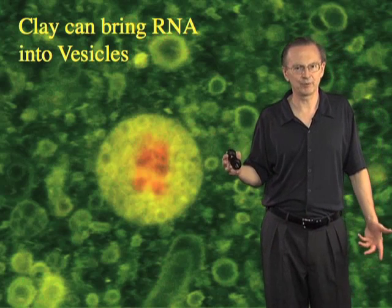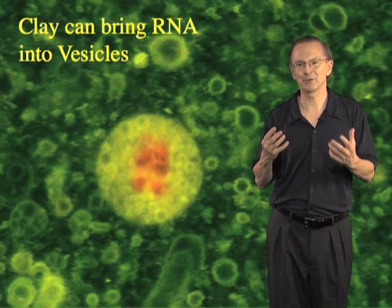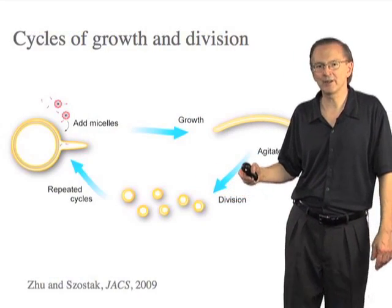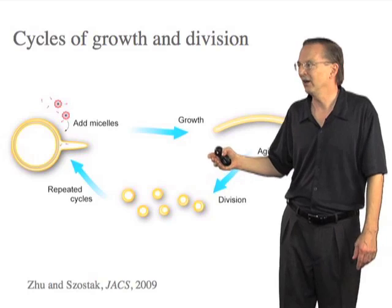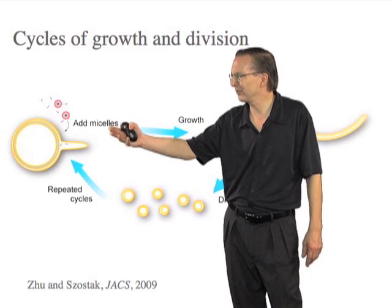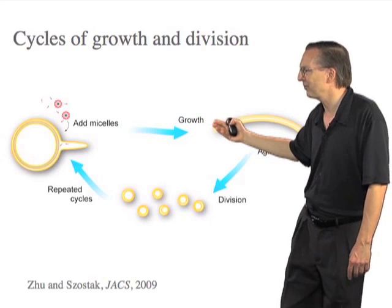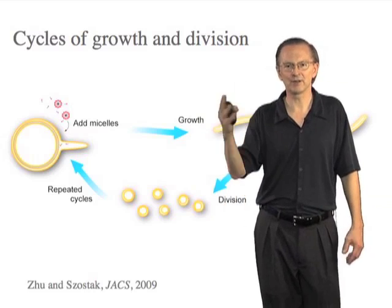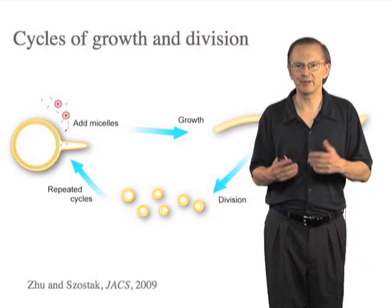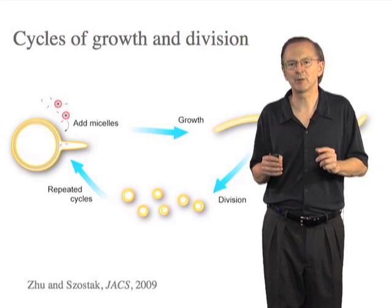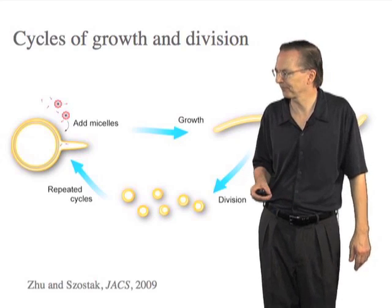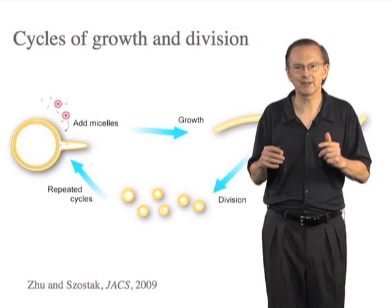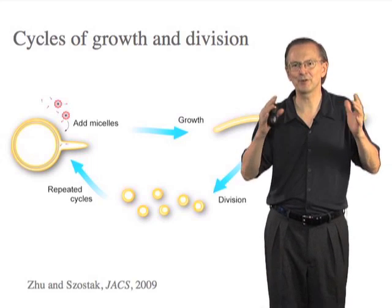Assembling these things looks fairly simple. But what about the process of growth and division? After all, that's what we really need to generate cell-like structures that can propagate. We've come up with a process that looks fairly robust: we can start with vesicles, add food in the form of fatty acid micelles, they grow remarkably into filamentous structures which can then divide very easily into daughter cells, generating a cycle that can go around and around indefinitely. Putting this cycle together with our thinking about nucleic acid replication, we can actually start to imagine what a primitive cell cycle would have looked like.